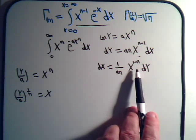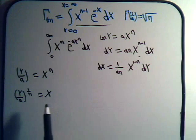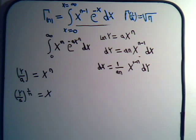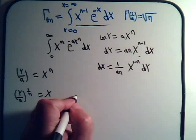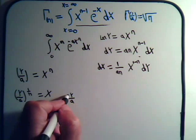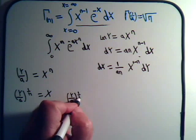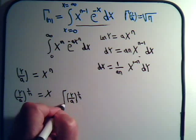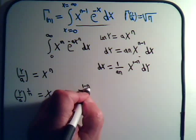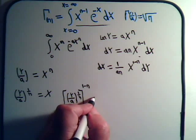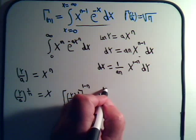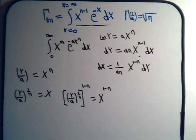But we want to have x to the 1 minus n power. So I have to raise both sides of this equation to the 1 minus n power. So here we're going to have y over a to the 1 over n raised to the 1 minus n power. And that will equal x raised to the 1 minus n power.